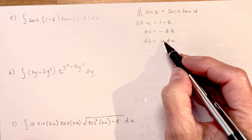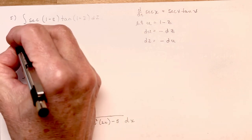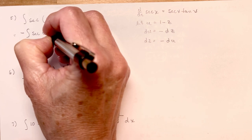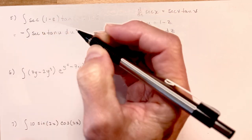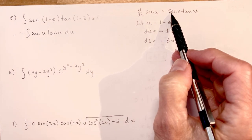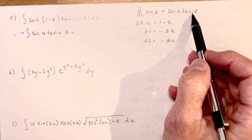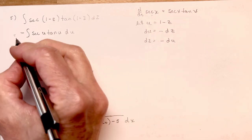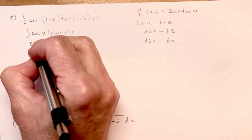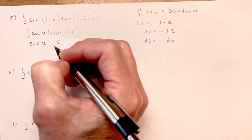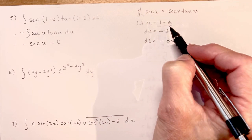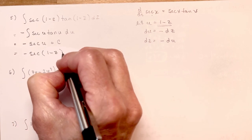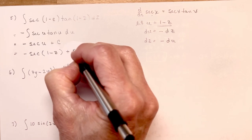So using u-substitution and accounting for the negative sign, this is equal to the negative integral of secant u tan u du. Since secant u tan u is the derivative of secant u, the integral gives us negative secant u plus c. Don't forget to plug the u back in: negative secant of 1 minus z, plus c. And don't forget your plus c.